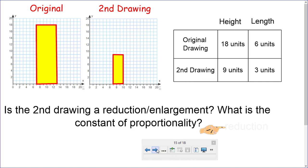Here's an interesting question. It's a drawing. Is the second drawing a reduction or an enlargement? What is the constant of proportionality? So we have two charts here. Here's a drawing. The original looks like a big rectangle. And here's a second rectangle. Looks a little smaller. So that's the original, and that's the drawing.